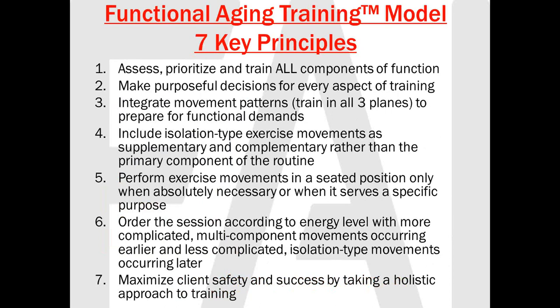Our functional aging training model is where functional training meets the physiology of aging. Here are our seven key principles. Ideally, we'd like to assess, prioritize, and train all components of function. Depending on your situation, you might not be able to do formal assessments — if you're in a large group or big gym environment, then you might not have the capability. In that case, we need to address these components of function differently, making purposeful decisions for every aspect of training to make sure we're hitting all those components effectively.